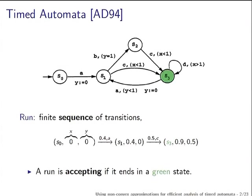What is a run of a timed automaton? It is just a finite sequence of transitions — we are interested only in finite sequences. Starting from the initial configuration where the initial state is S0 and X and Y are 0, suppose the automaton spends 0.4 time units in state S0. The value of X and Y increase to 0.4 and then it takes the transition.